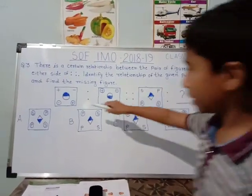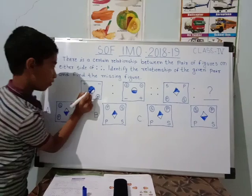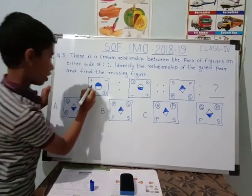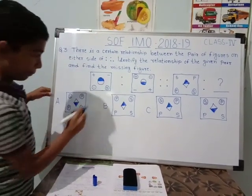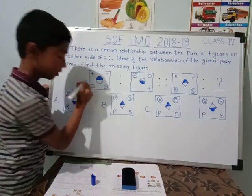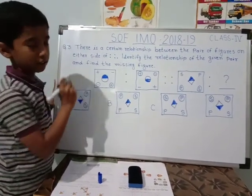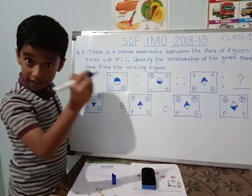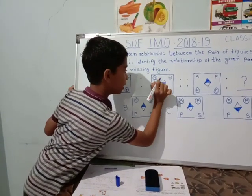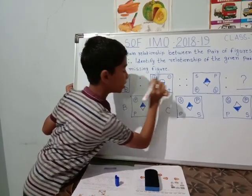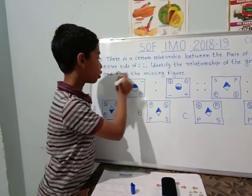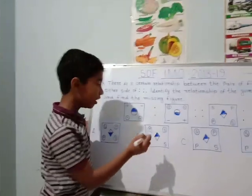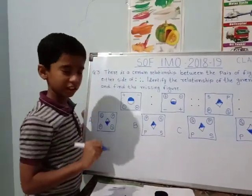Let's look at both pairs first. We have a plus and a minus. In the first pair they are both not circled, but here they are both circled. Now it is the opposite. Here they are both circled, but here they are both not circled. And again here both are circled, but here both are not circled.